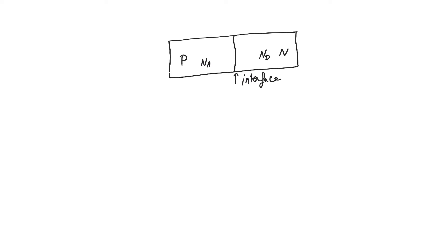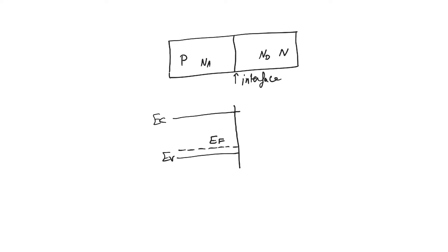The n-side is rich in electrons and the p-side is rich in holes. Now let's draw the band diagram of the p-side: there is a conduction band edge, a valence band edge, and a Fermi level that is below the mid-gap. By definition, p-type means the Fermi level is below the mid-gap. On the n-side, we have a conduction band edge and a valence band edge, and the Fermi level is above the middle of the band gap.